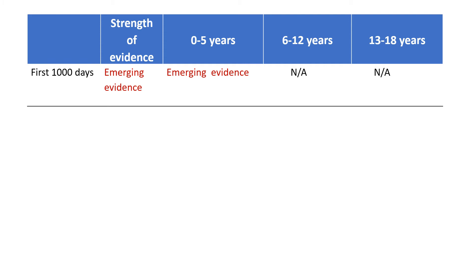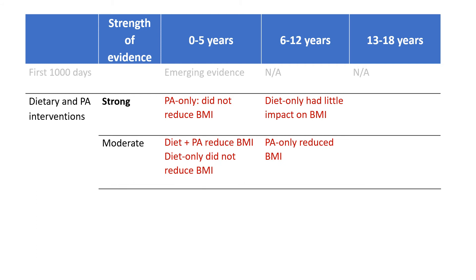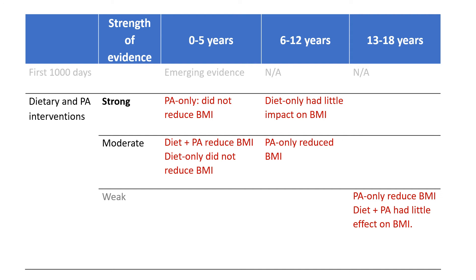There is emerging evidence for interventions in the first 1000 days of life. Dietary and physical activity interventions have strong evidence. Physical activity alone did not reduce BMI in the early years, whilst diet only had little impact on BMI in the 6–12 year age group. Overall, the picture on physical activity and diet can be a little confusing, but the evidence shows that both factors are involved, and the table may reflect that more evidence is required.